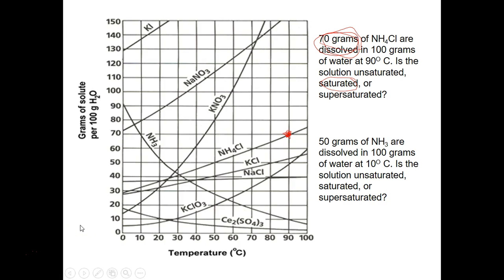The second question tells us to look at NH3 and it says 50 grams of NH3 are dissolved in 100 grams of water at 10 degrees Celsius. Is the solution unsaturated, saturated, or supersaturated? We're going to find NH3 and we're going to find at 10 degrees, it's supposed to be somewhere here right about 70, maybe a little bit less, but we look at the problem and the problem tells us we've only dissolved 50 grams. We compare this to what it's supposed to be. It's supposed to be about 70, we're only at 50. This is under the line, we would call that unsaturated.